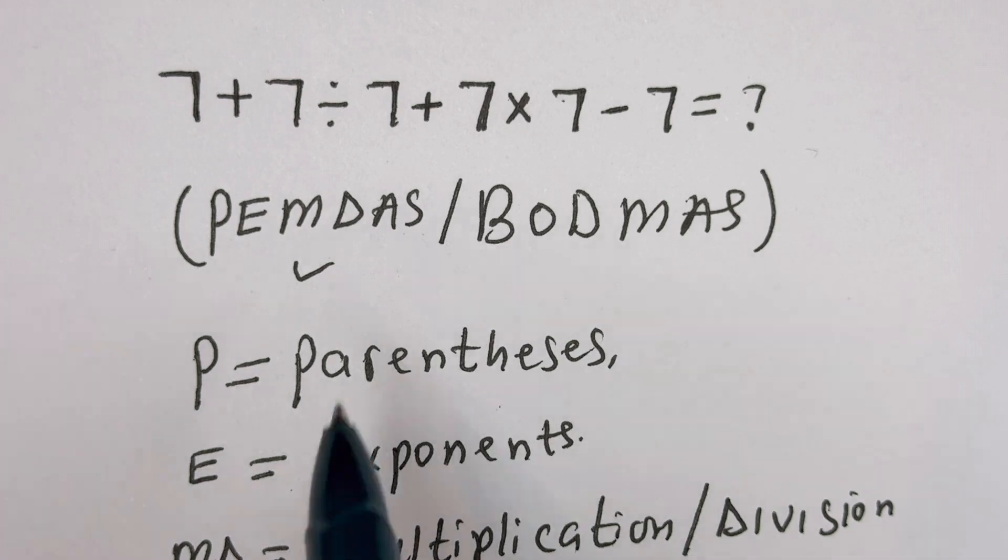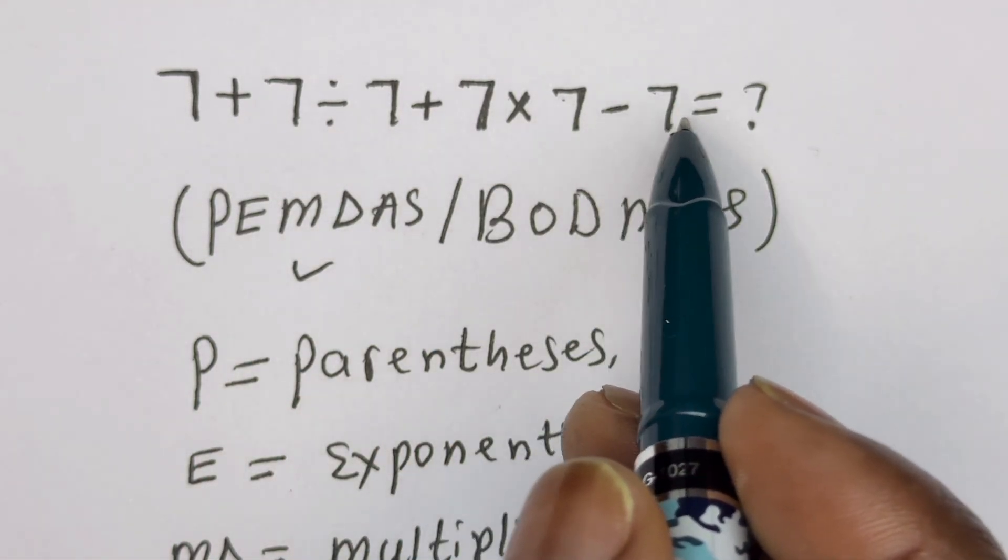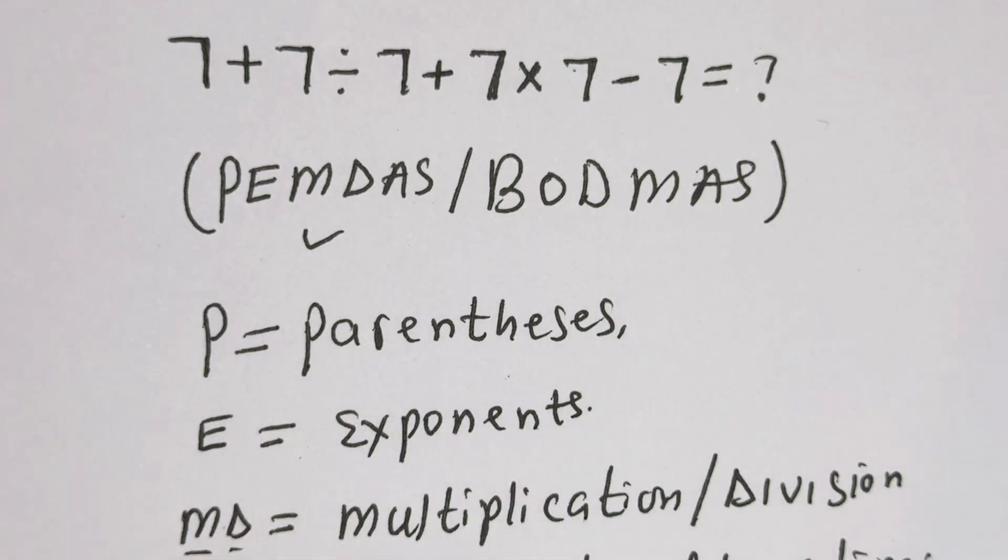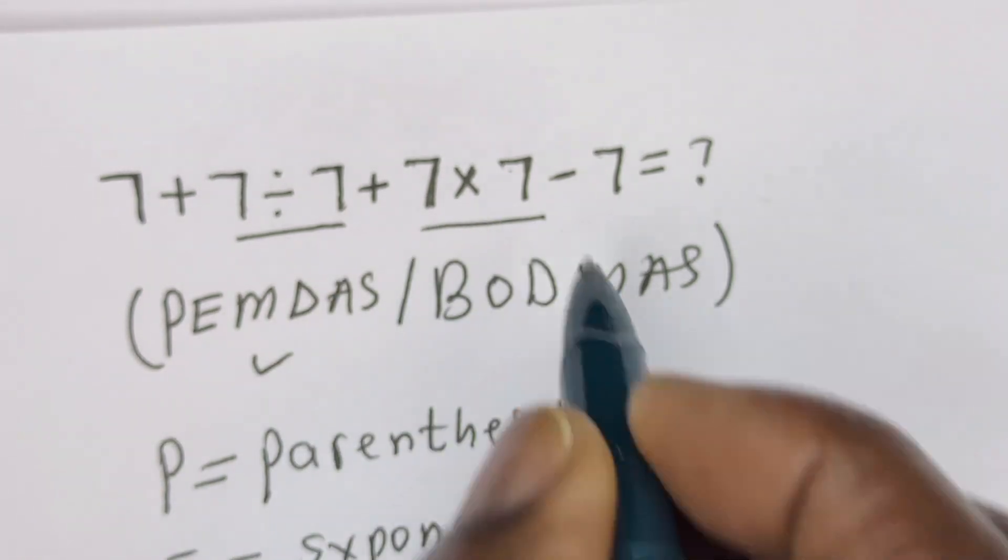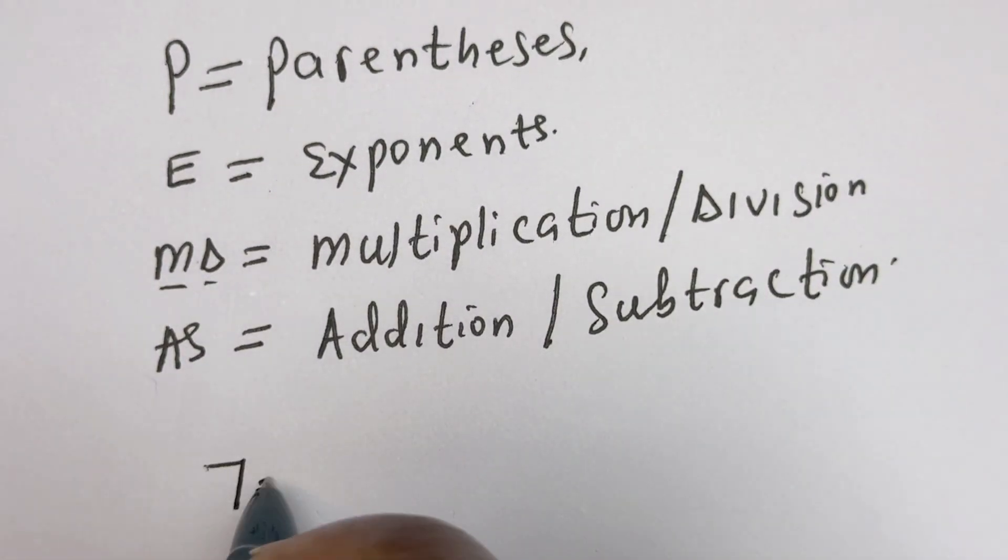In this question, we have 7 + 7 ÷ 7 + 7 × 7 - 7. Let's consider the multiplication and division first. Here we have the division and here is multiplication. 7 ÷ 7, this equals 1.